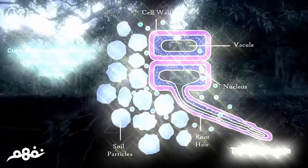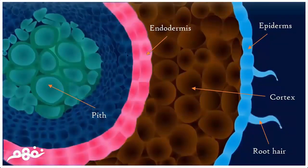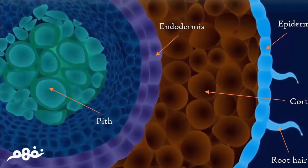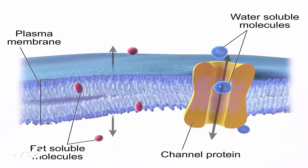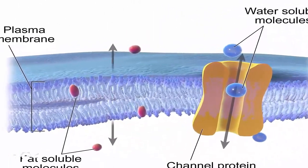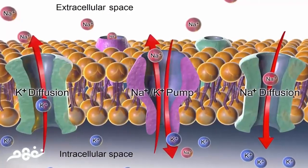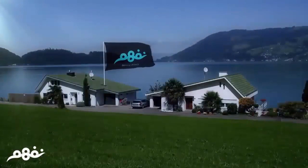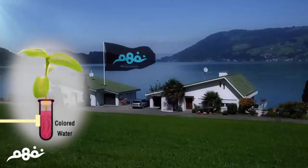The endodermal cells regulate water crossing into a tissue called xylem vessels. Now, what about mineral salts — do they enter through the membrane freely? Actually, no. The cell membrane has selective permeability, meaning it allows only certain salts to pass through according to the plant's needs.